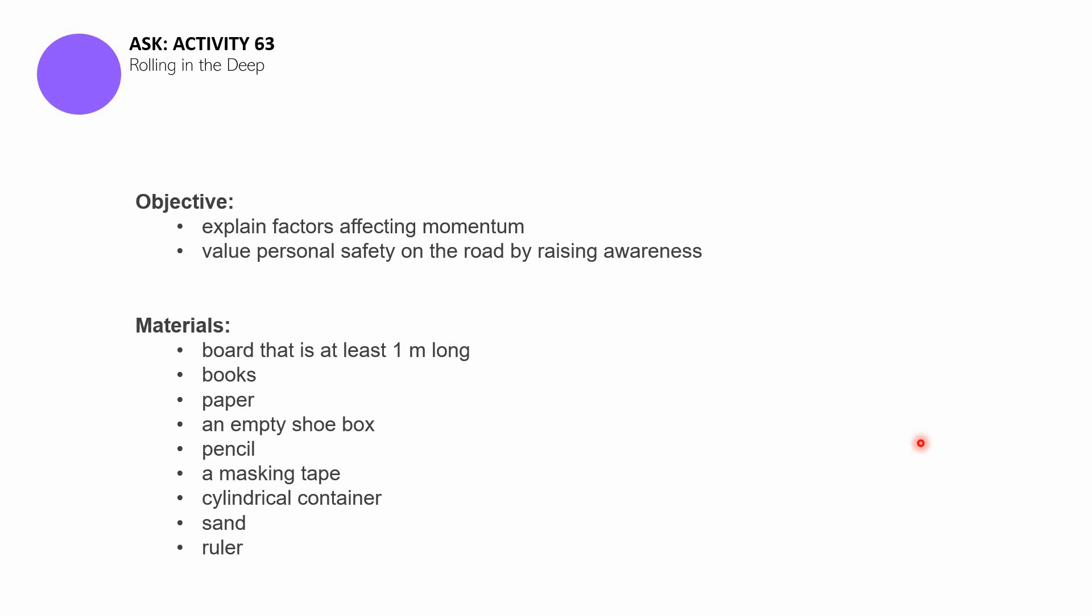So for the materials, we have the following. The first one is a board that is at least one meter long. This board can have a variety of widths. Also, you will need books, sheets of paper, an empty shoe box, pencil, a masking tape, cylindrical container, sand, and a foot rule.